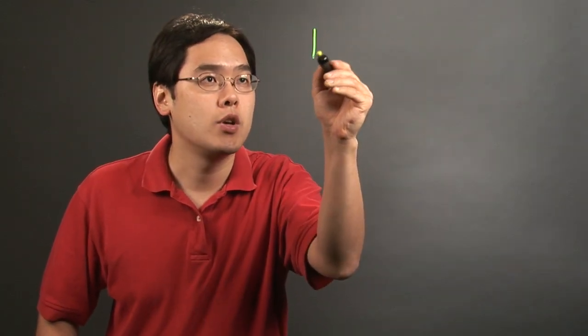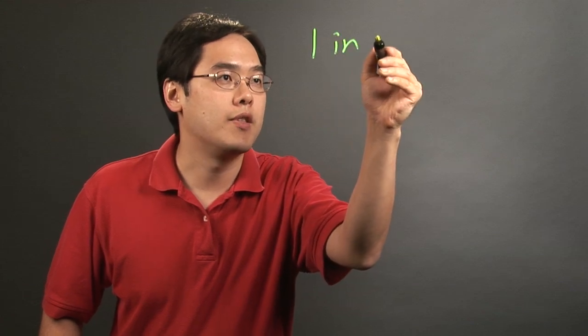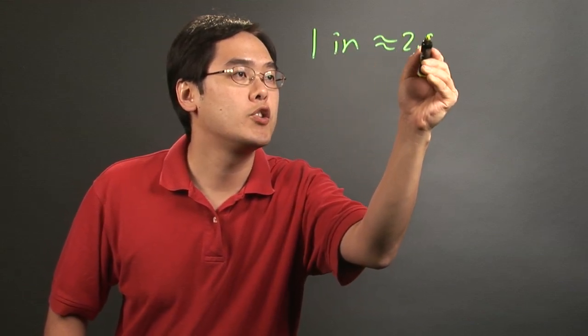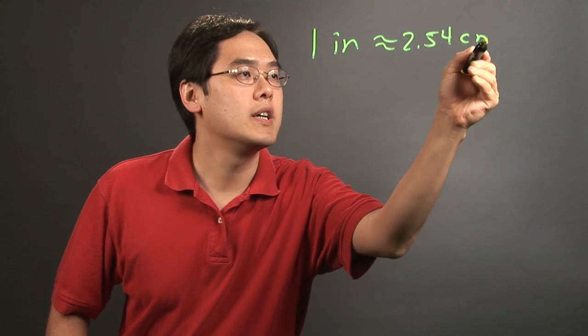Now, the one formula that you want to think about is actually this that folks tend to recognize more often than not. One inch is going to approximate 2.54 centimeters.